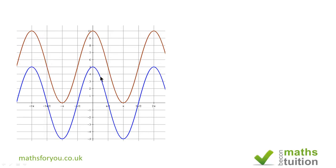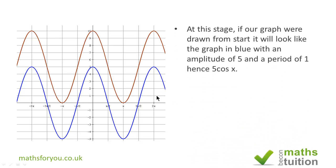Now if we were to plot the graph as we know it so far, it would look like the blue graph and that is the graph of 5 cos x.